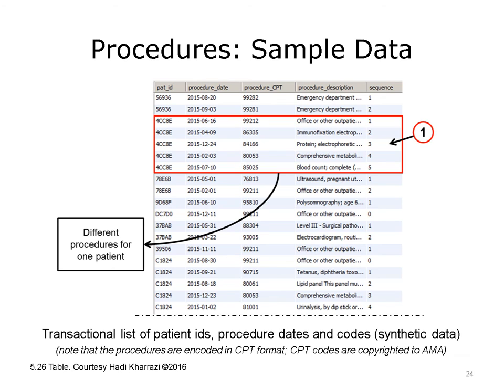This table shows a list of patients and their procedures based on claims data. The table includes synthetic data and is transactional, meaning each patient has a separate row for each rendered procedure. The procedures are encoded in CPT. This table is sorted based on patient ID to show the list of procedures for a given patient. As shown by Arrow 1, one of the patients has had five different procedures over a span of almost six months.